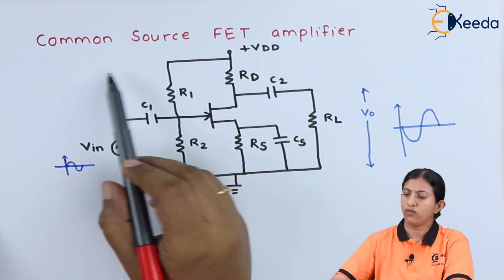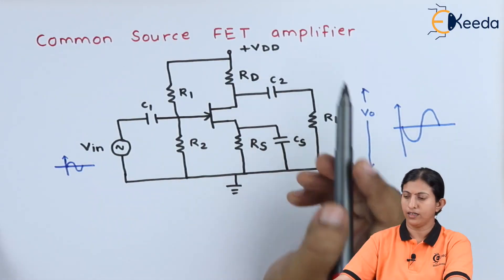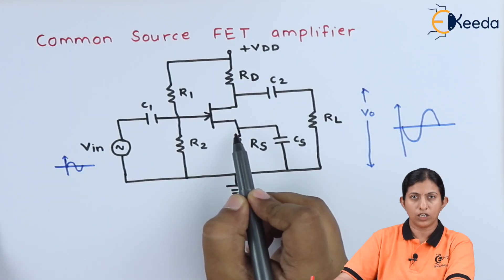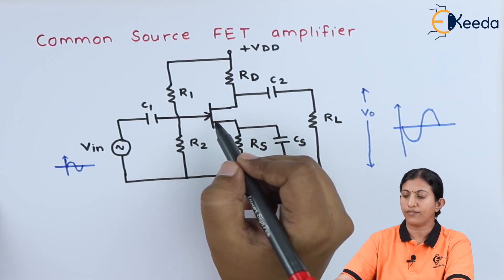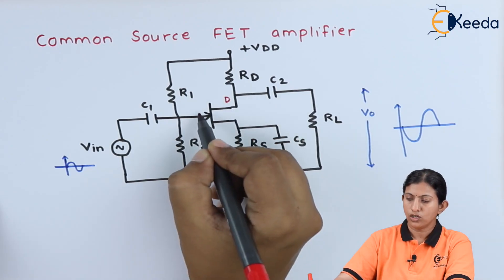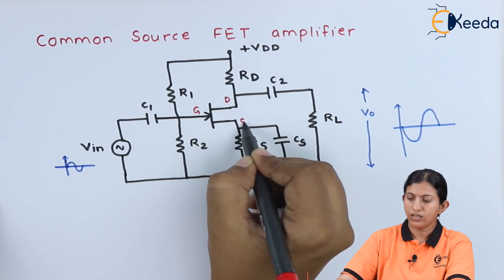Here is the diagram of the common source FET amplifier. We are using the source terminal as common. We are using an n-channel JFET which has terminals drain, gate, and source.